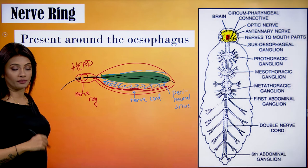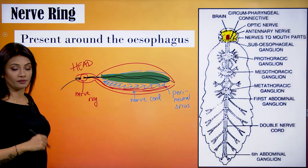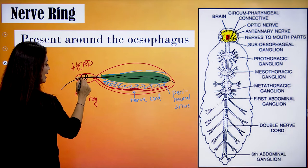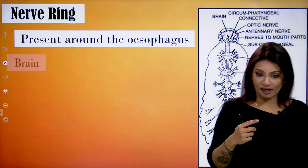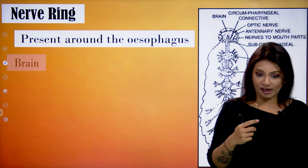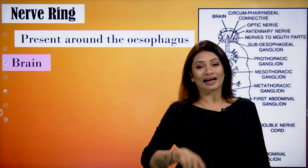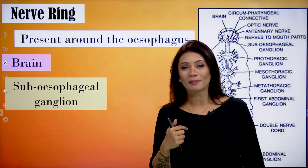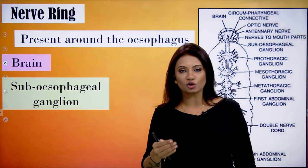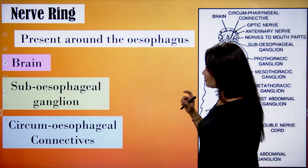The nerve ring is made up of one part on the top and another part on the bottom, connected together — it is a ring present around the esophagus. It is made up of superior ganglions: because they are big ganglions present in the head region, we can call them the brain. The nerve ring is also made up of ganglions below called the sub-esophageal ganglions, and to connect them is the circum-esophageal connective.